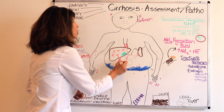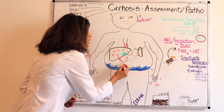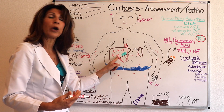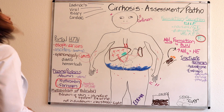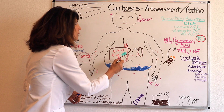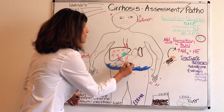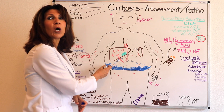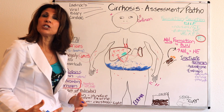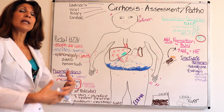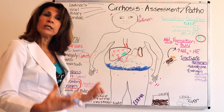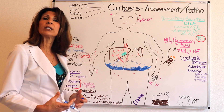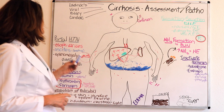Another sequela of portal hypertension is that large plasma proteins are not able to pass through like red blood cells can. Because of the portal hypertension, the larger colloidal proteins seep down and fall into the peritoneal space where fluid accumulates, causing what we call ascites. Ascites is the accumulation of fluid in the peritoneal space. This adds a lot of weight, and if uncontrolled it continues to build up, applying pressure to the patient's diaphragm, causing difficulty breathing and dyspnea that prompts hospitalization.